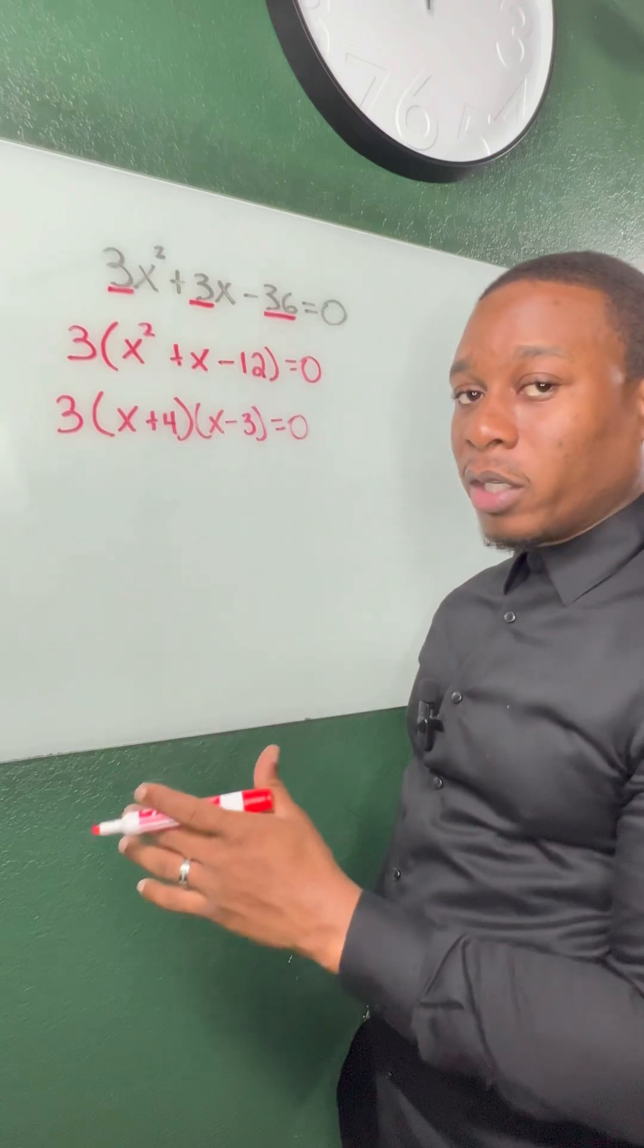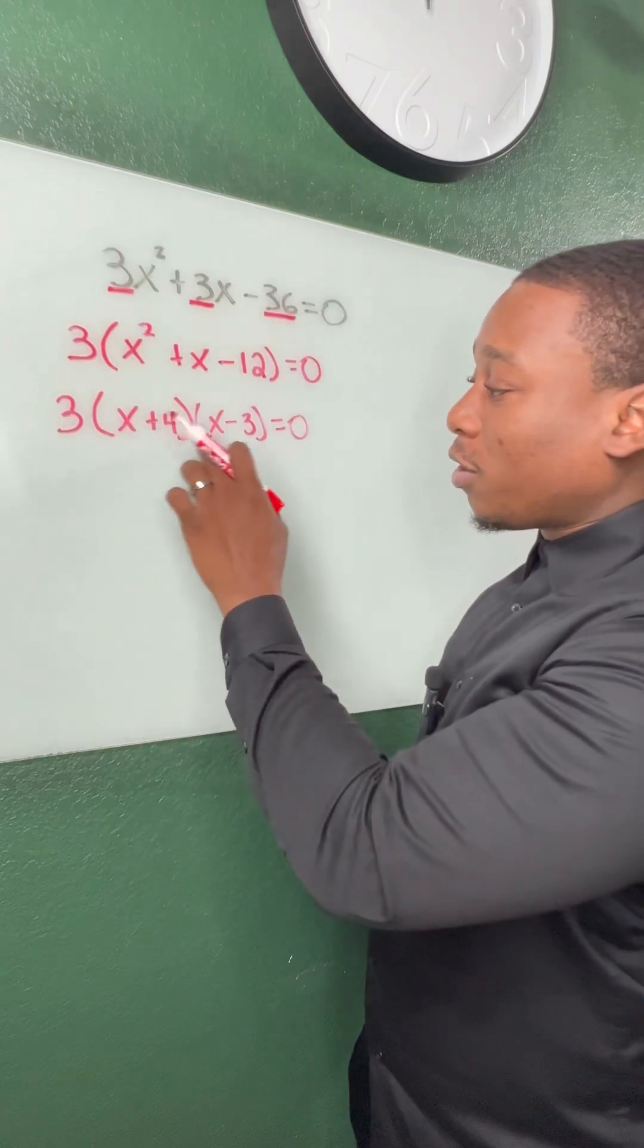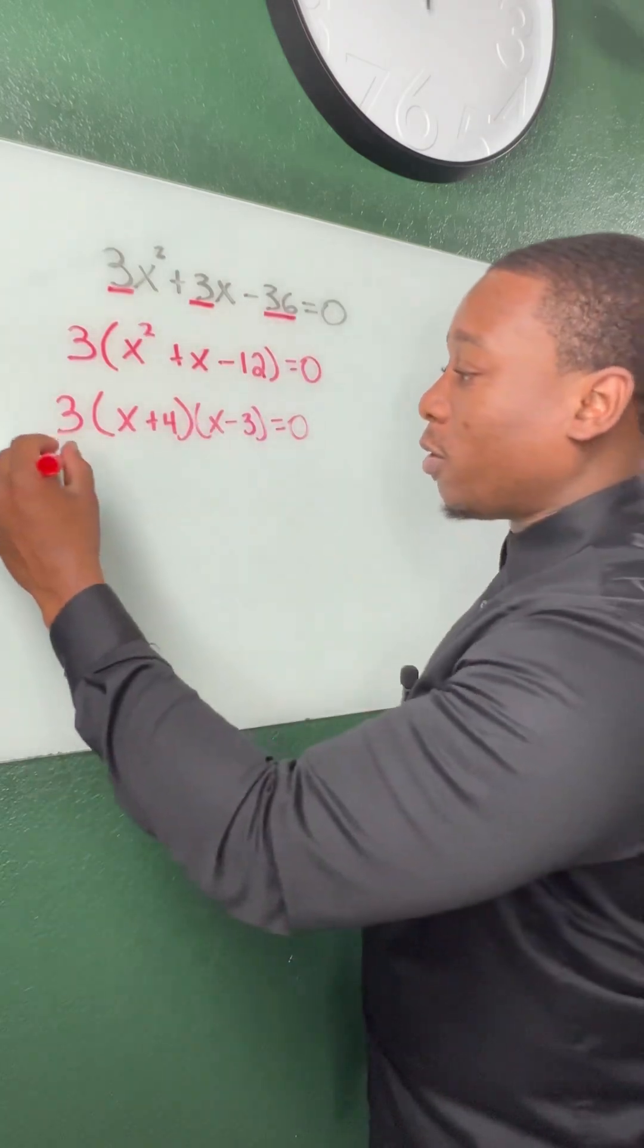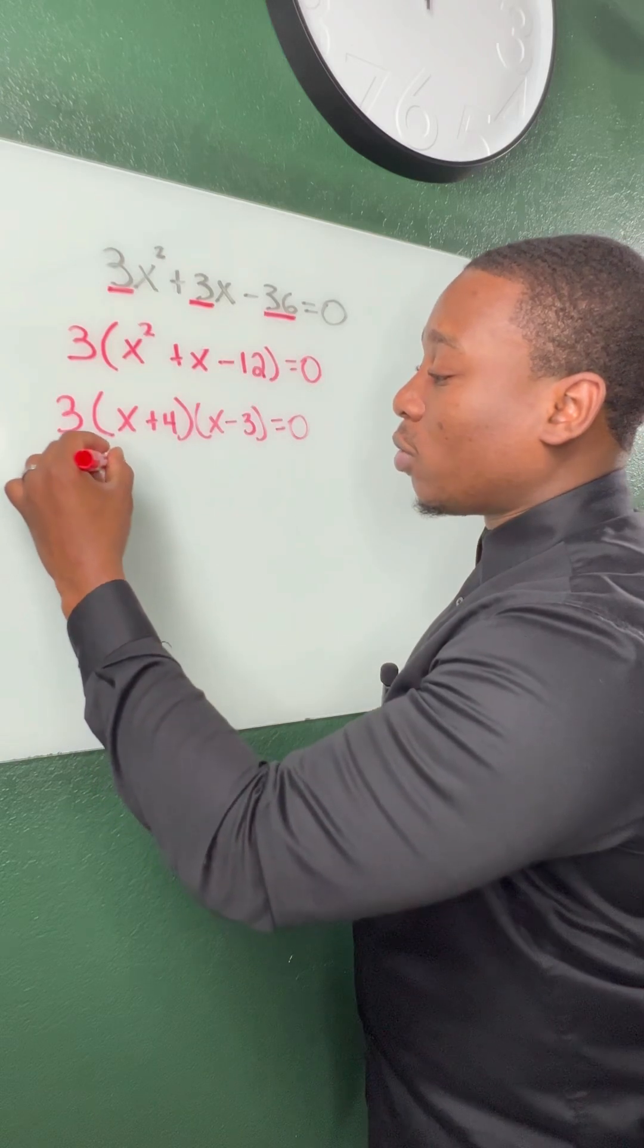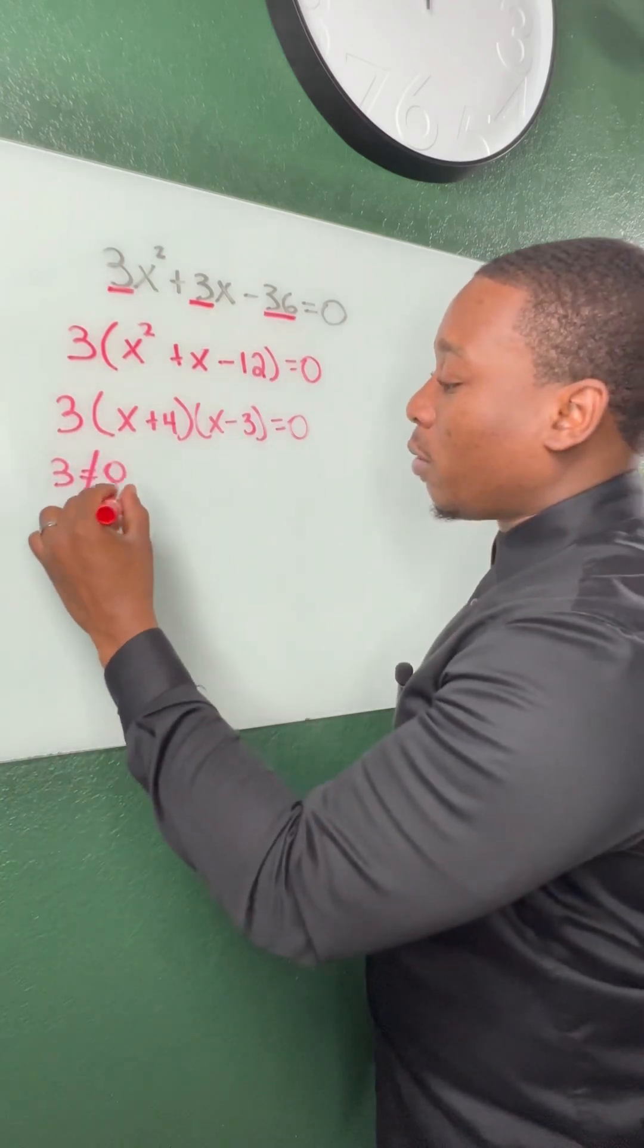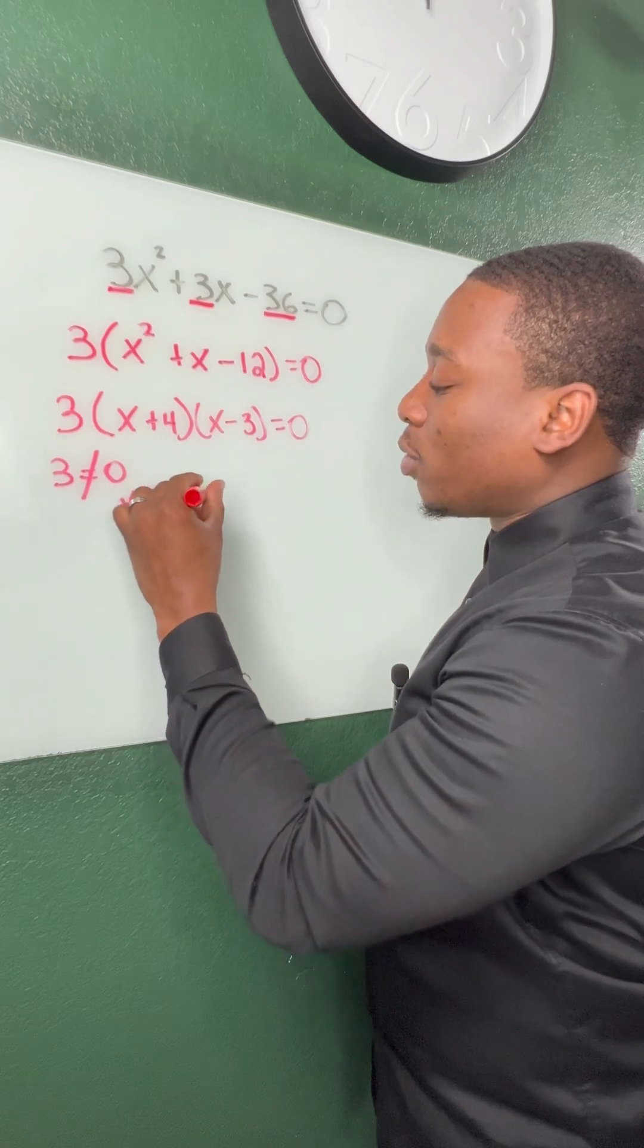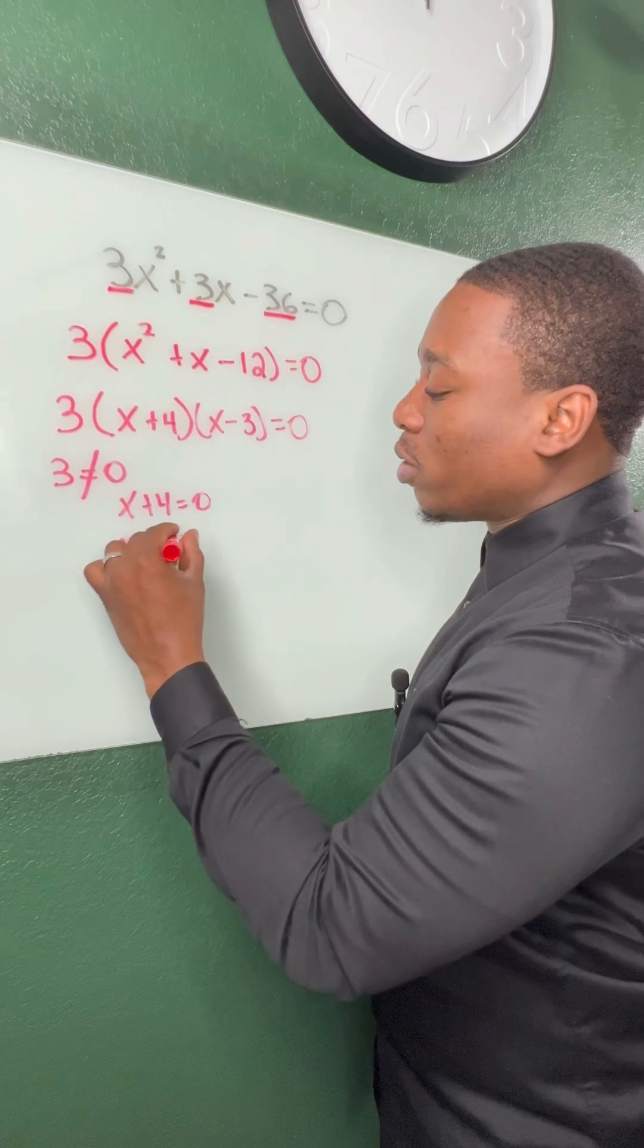Please don't forget, we're not done at this step. You have to set each factor equal to 0 and solve. So the first one, 3 is equal to 0? No. We tossed that out. x plus 4 is equal to 0, so we know x is equal to negative 4.